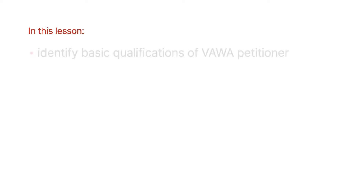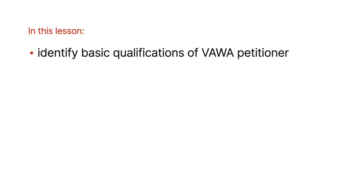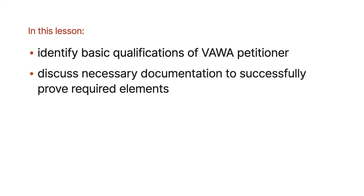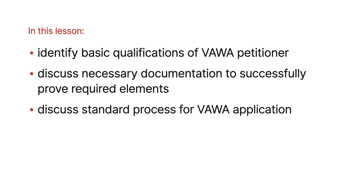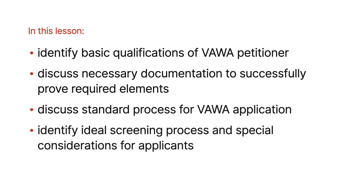First, we're going to identify the basic qualifications of a VAWA petitioner, including eligibility for derivative applicants. Then we're going to discuss the necessary documentation to successfully prove the required elements, including tips on how to obtain difficult documents. We're also going to talk about the standard process for a VAWA application — when to apply for adjustment of status concurrently or separately — and the ideal screening process for attorneys to perform during potential consults and special considerations when working with applicants.